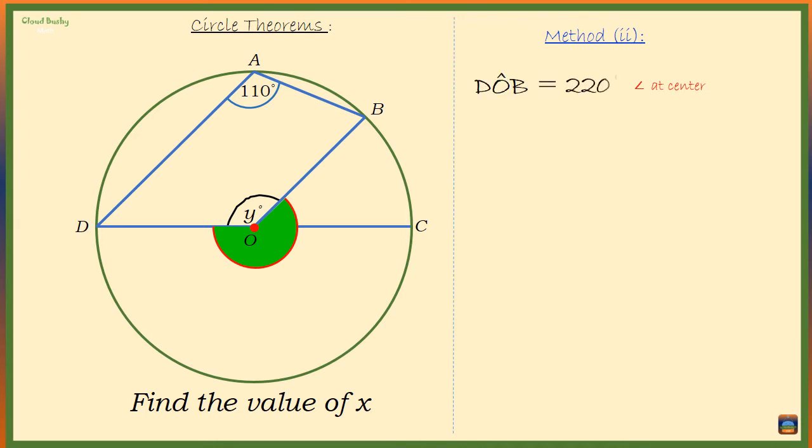It is 2 times the angle A which is of the size 110 degrees at the circumference of the circle. Y plus 220 degrees should be 360 degrees, so y is equal to 360 degrees minus 220 degrees. So we have y is 140 degrees.